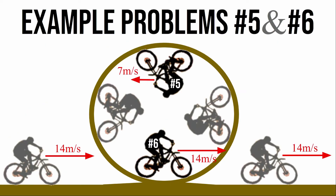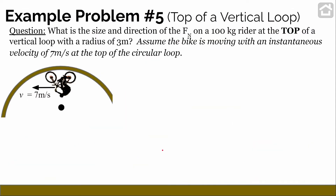We're going to look at two quantitative example problems with a biker moving through a vertical loop, focusing on the forces at the top and at the bottom of the loop. The first question reads: what is the size and direction of the normal force on a 100 kg rider at the top of a vertical loop with a radius of 3 meters, assuming the bike is moving at an instantaneous velocity of 7 m/s at the top?